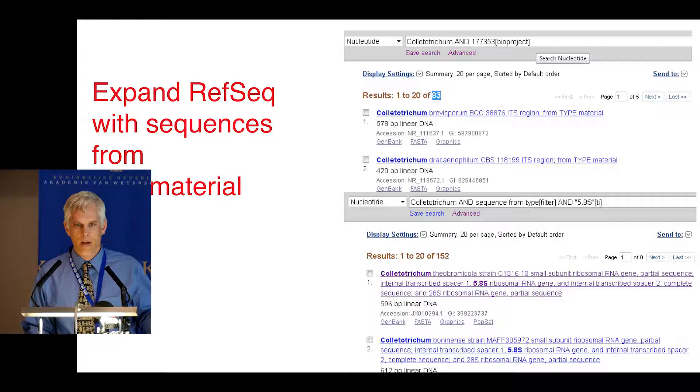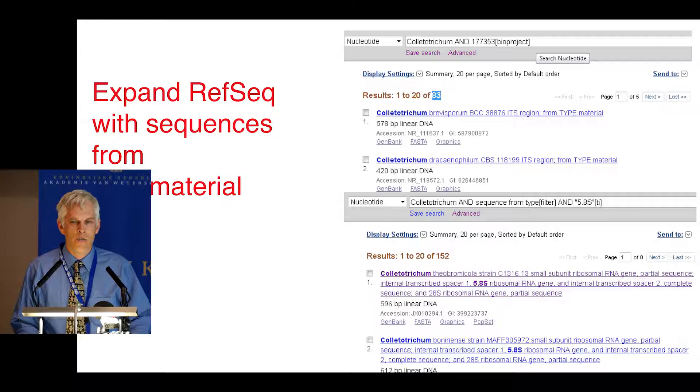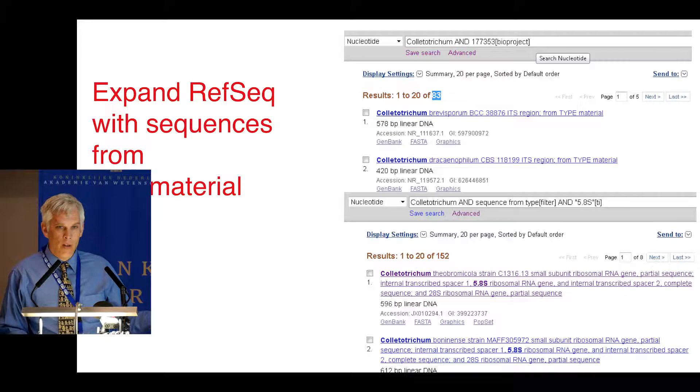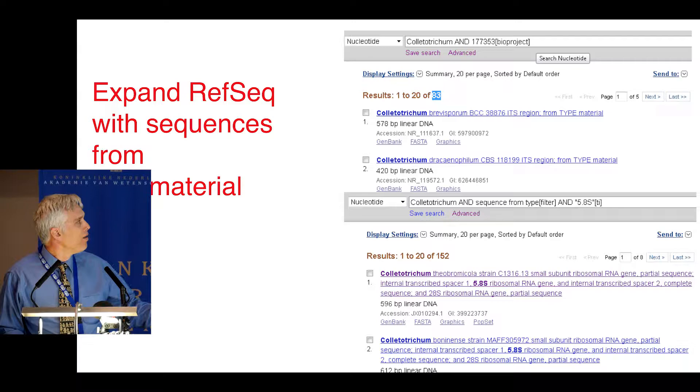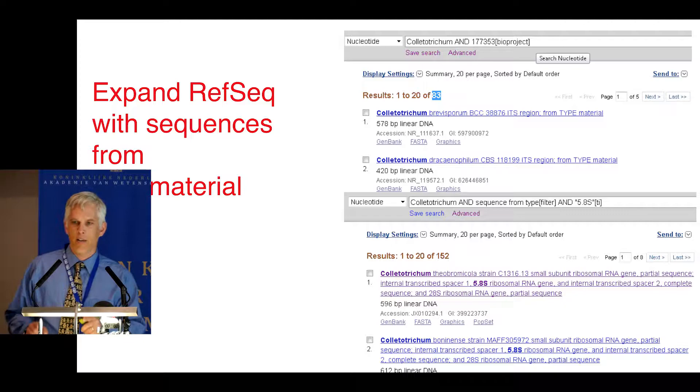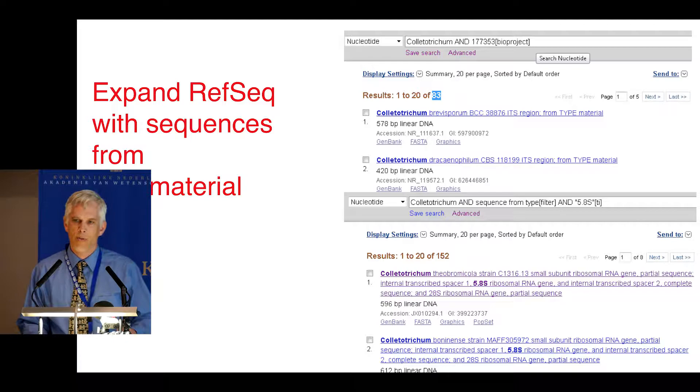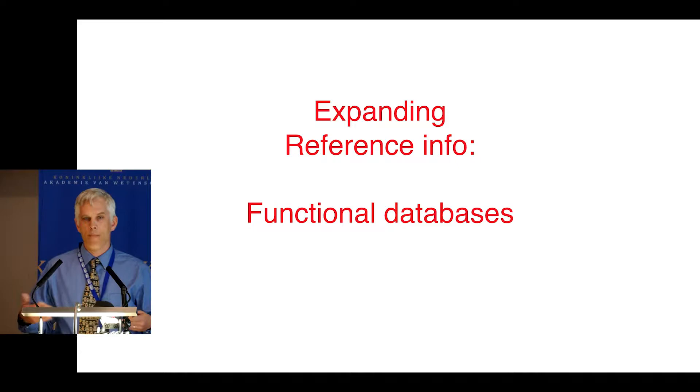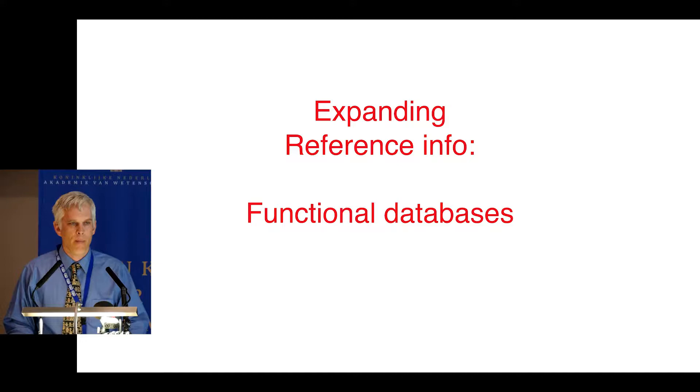Let's go back to our Colletotrichum example. I showed you the RefSeq ITS database. If we look at how many Colletotrichum ITS sequences there are in GenBank, 83 are currently listed in the RefSeq database. That's been verified and annotated. If we want to expand RefSeq, there's another 69. There's a total of 152 just from cross-linking information in the taxonomy database with the nucleotide database. I could validate another 69 sequences and put that into the RefSeq database. That would be a high priority to do.